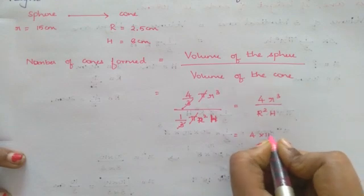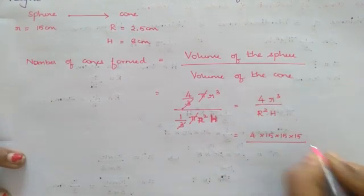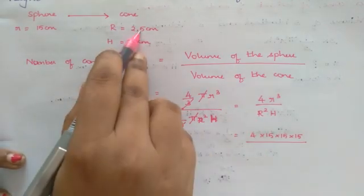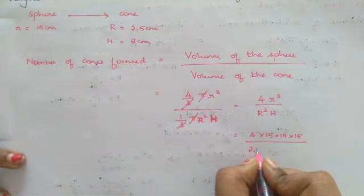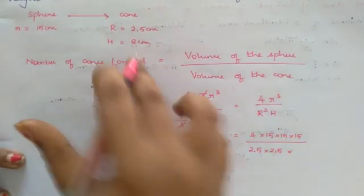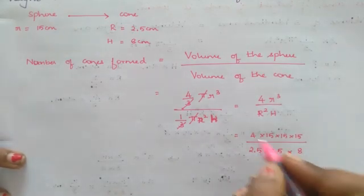Small r, that is the radius of the sphere, that is 15. So 4 into 15 into 15 into 15, 15 cube. So 15 multiplied 3 times. R square 2.5 into 2.5. H 8. Right.